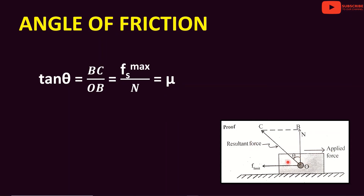Substituting, BC is Fs max, the maximum value of static friction, and OB is N, the normal reaction. So tan theta equals Fs max divided by N, which equals mu, the coefficient of friction. Therefore, tan theta equals mu, and theta is called the angle of friction.